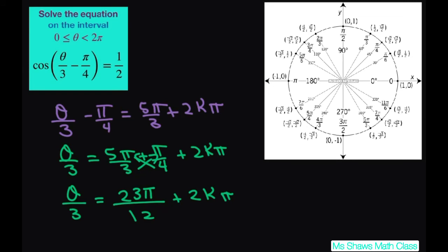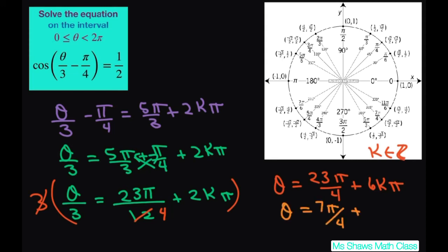Now we're going to multiply everything through by 3. So that gives you theta equals, 3 goes into 12 four times, so you're going to get 23π divided by 4 plus 6kπ. And k is any integer. Our other one we had was theta equals 7π divided by 4 plus 6kπ.